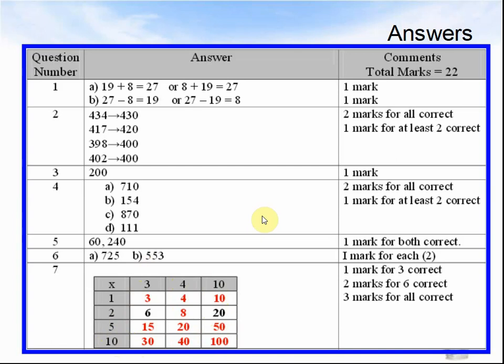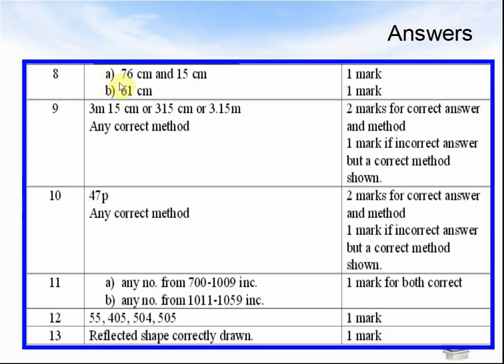Let's look at question 8. 176cm for the rectangle perimeter and 15cm for the triangle. And if you take away 76 minus 15 equals 61.